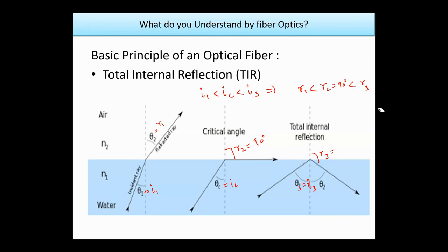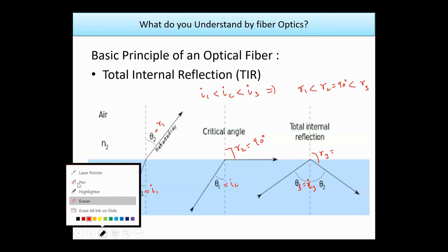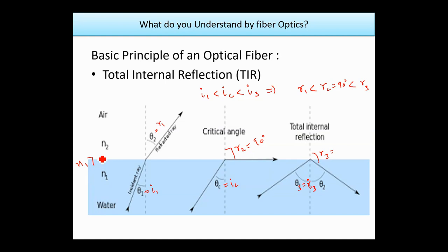For total internal reflection, there are two conditions that must be satisfied. First, the refractive index of the first medium, N1, is always greater than N2. Second, the angle of incidence I is always greater than the critical angle — the incident angle must be greater than the critical angle.